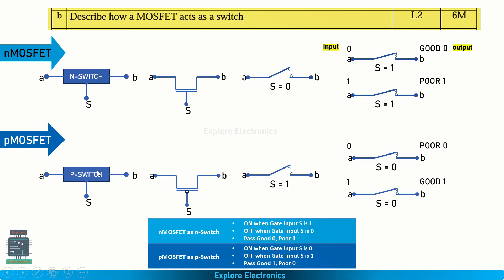Similarly, when the P MOSFET gate is connected to logic 1, the switch is open — the ON case is reversed. When gate input S is 1, the N MOSFET turns ON; when gate input is 0, the P MOSFET turns ON. One more important point: N MOSFET passes good 0 but poor 1, while P MOSFET passes good 1 but poor 0. This explanation with diagrams is sufficient for 6 marks. You need to explain that the gate voltage creates a channel, allowing current to flow between source and drain.